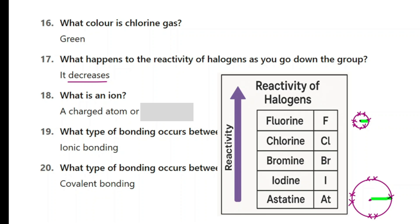Why does reactivity decrease going down the halogens? As the atomic radius increases, the atoms get larger, so the outer shell is now further away from the nucleus. The nucleus's ability to attract and absorb an electron decreases as you go down. Also there is more shielding — more inner electrons reduce the attraction between the nucleus and the incoming electrons. For those reasons, as you go down the group the reactivity decreases.